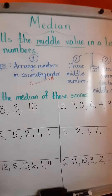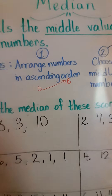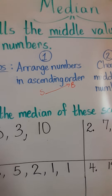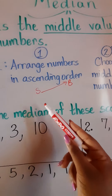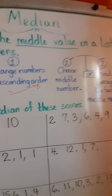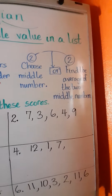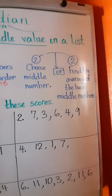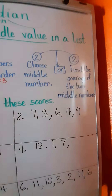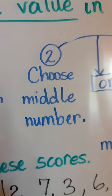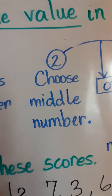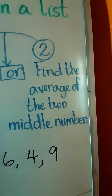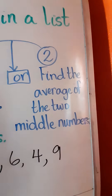Let's look at the steps to finding the median. Step 1: arrange numbers in ascending order. Ascending order means from small to big. Step 2 depends on whether you have one middle number or two. If you have one middle number, you will choose that middle number as your median. If you have two middle numbers, you will find the average of the two middle numbers.